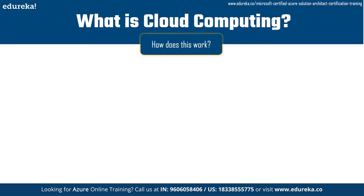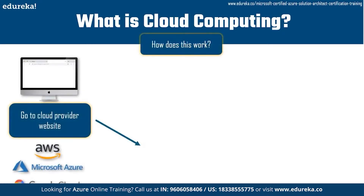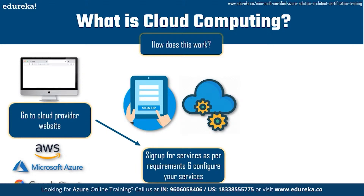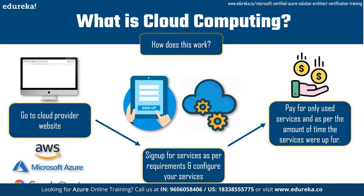So how does this work? John goes to whichever cloud provider he likes most — Amazon Web Services, Microsoft Azure, and Google Cloud are the top cloud providers. After going to the cloud provider's website, he signs up for an account, then signs up for services as per his requirements and configures the resources he needs for the app to run on. And the amazing thing is that he only pays for the services he uses and for the amount of time those services were up.